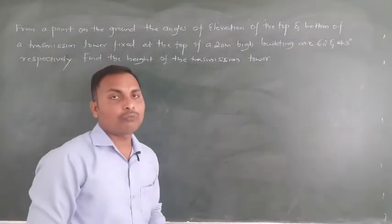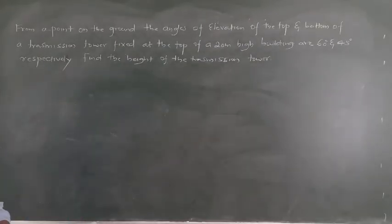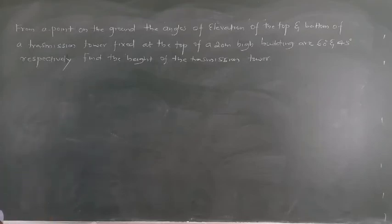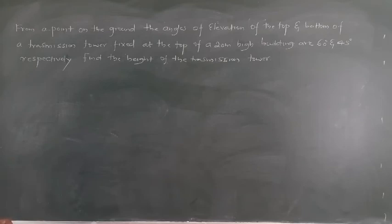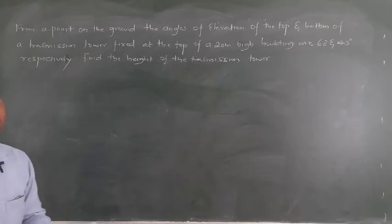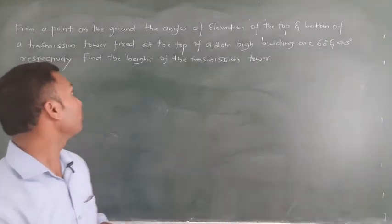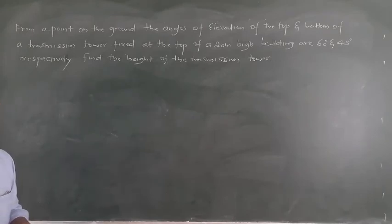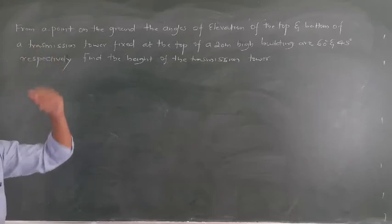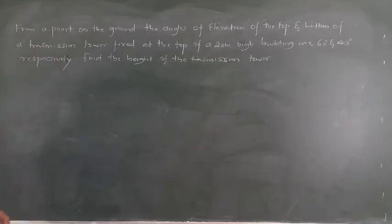Now we have the second question. From a point on the ground, the angle of elevation of the top and bottom of a transmission tower fixed at the top of a 20-meter high building are 60 degrees and 45 degrees respectively. Find the height of the transmission tower.